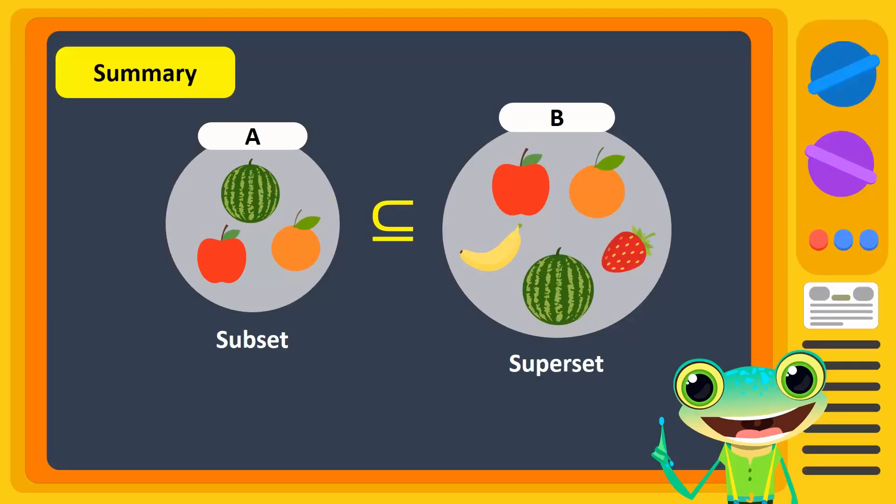In this video, we learned that set A is a subset of set B if every element of set A is also an element of set B. If A is a subset of set B, then set B is called a superset of the set A.